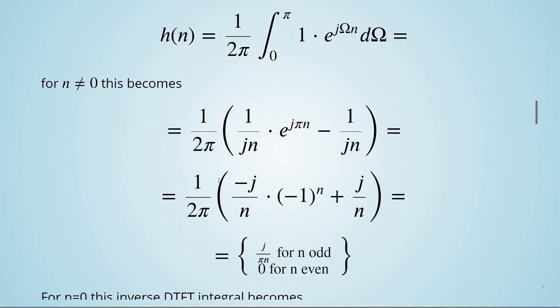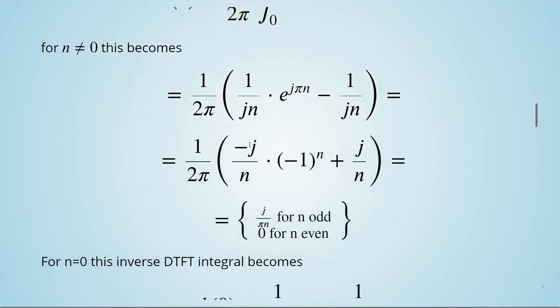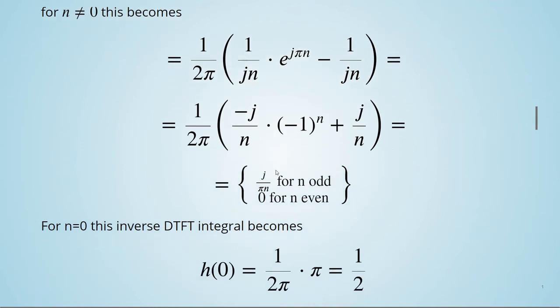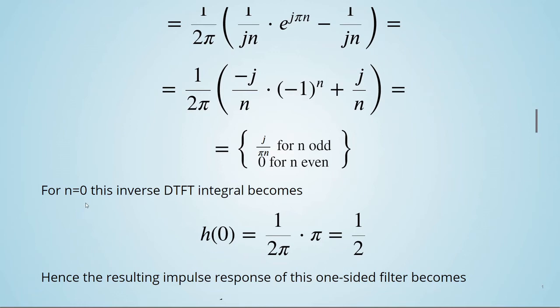With some more mathematical manipulations, we obtain this here: j divided by pi times n for n odd and 0 for n even.